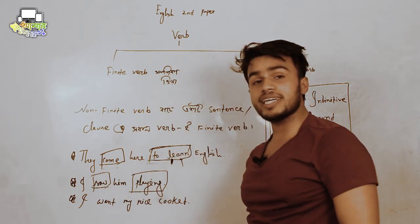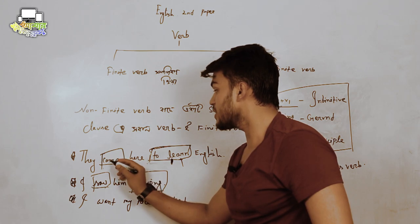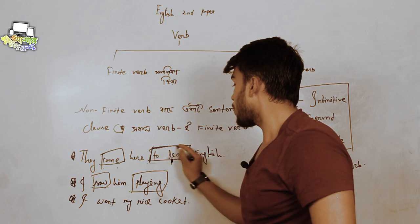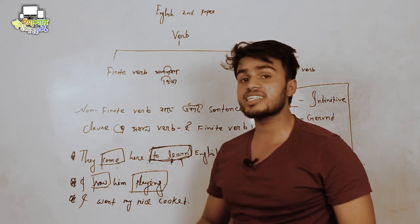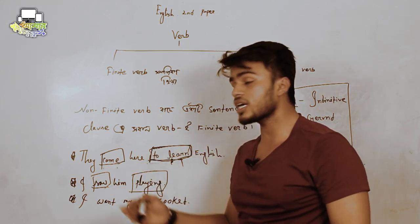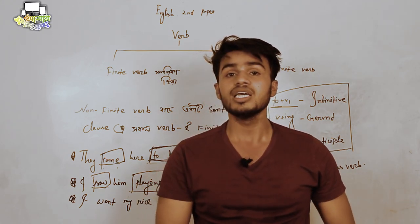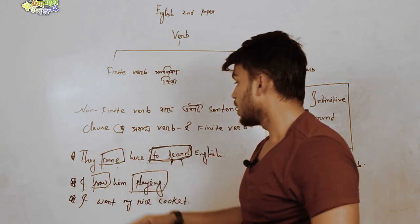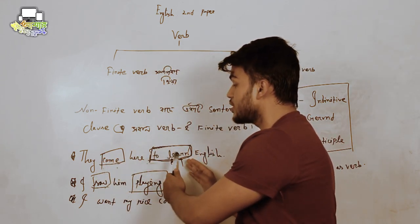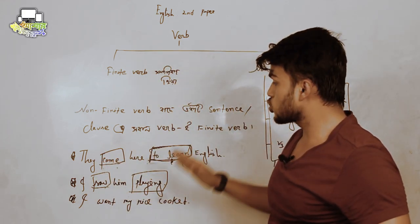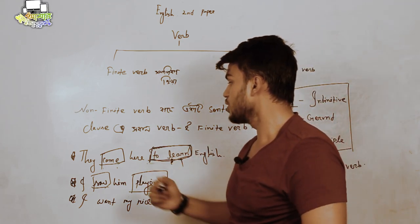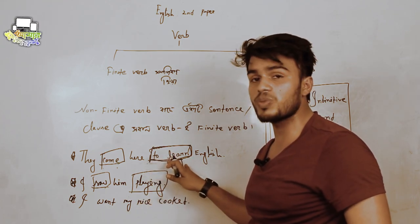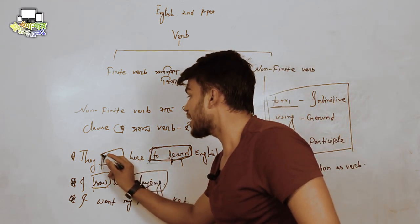To learn English, right? So they came here learning English, but he came to learn, right? So they came here to learn English. 'To learn' - 'to' plus verb one - so 'to' plus verb one is a non-finite verb, because you cannot justify or change 'to' plus verb one.